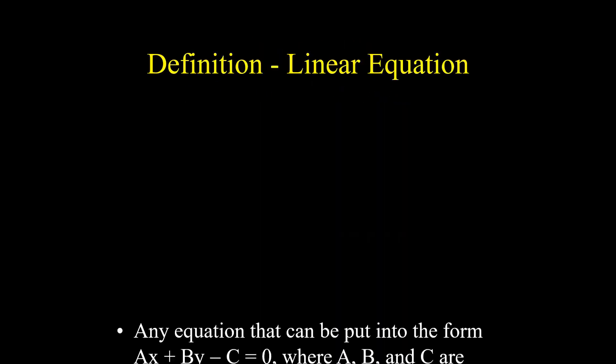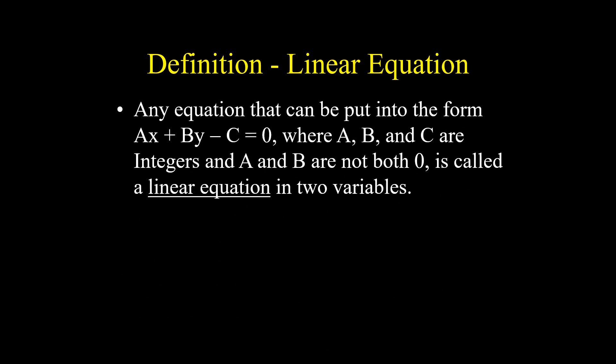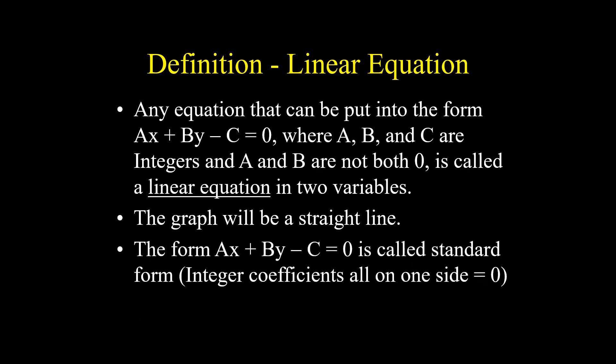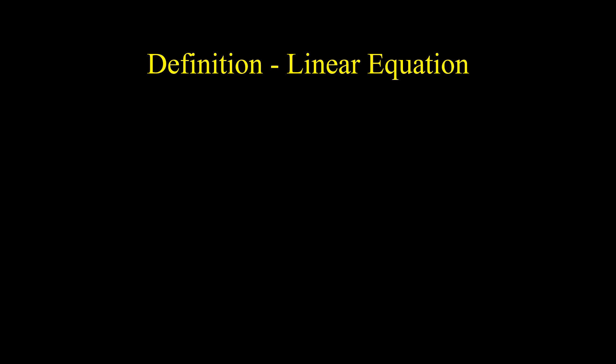Definition of linear equation: Any equation that can be put into the form ax plus by minus c equals zero, where a, b, and c are integers, and a and b are not both zero, is called a linear equation in two variables. The graph will be a straight line. The form ax plus by minus c equals zero is called standard form — integer coefficients, all on one side, equals zero.